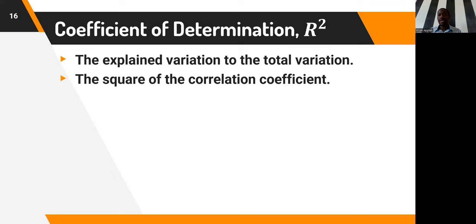If the data are not interval or not normally distributed, then use other correlation coefficients — the Spearman's correlation coefficient or Kendall's tau correlation coefficient. This is the key decision rule: normal interval data uses Pearson; non-normal or non-interval data uses Spearman or Kendall's tau.